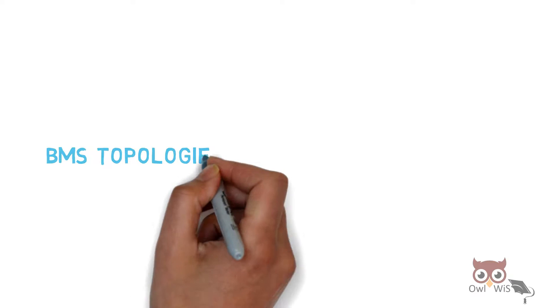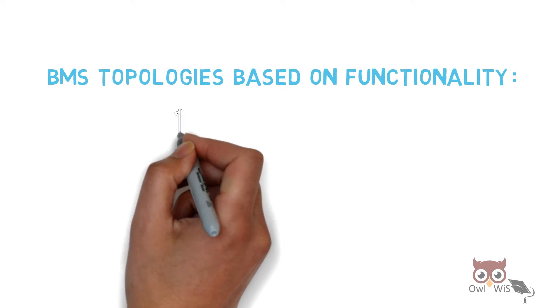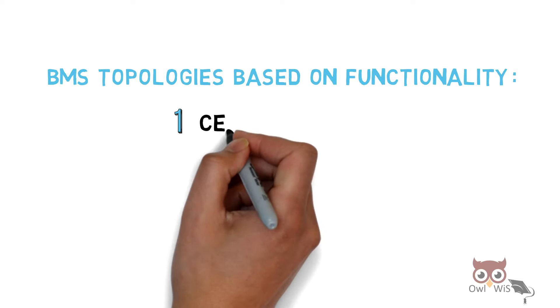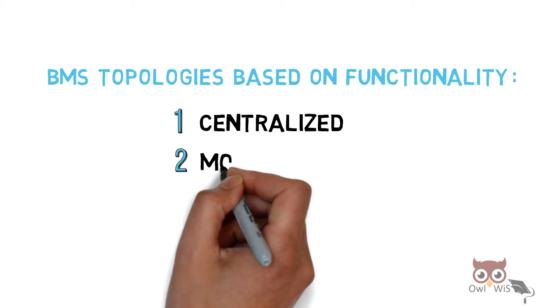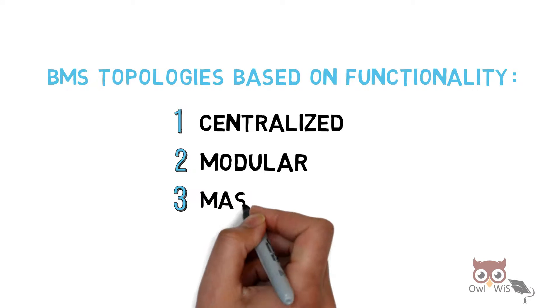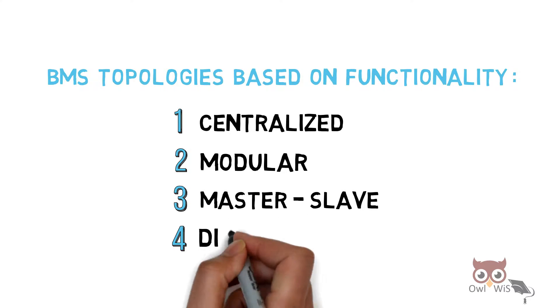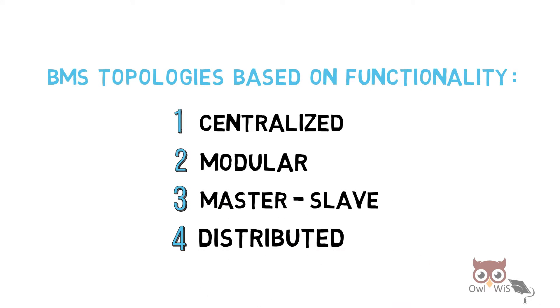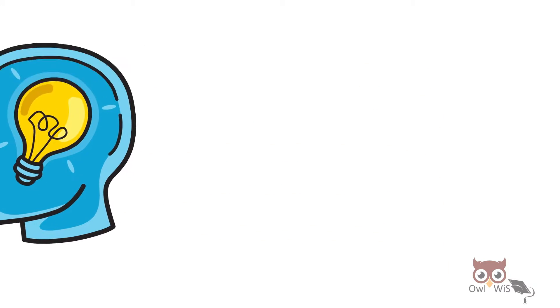BMS Topologies based on functionality: First, Centralized Topology. Then Modular. Then Master Slave. And last, Distributed. Let us understand each one of them.